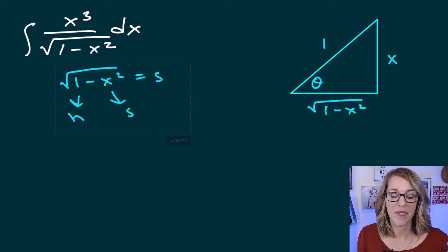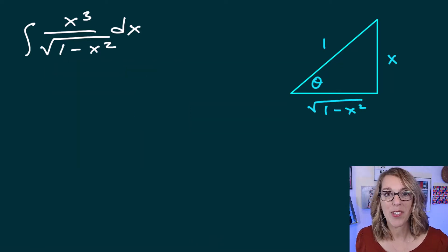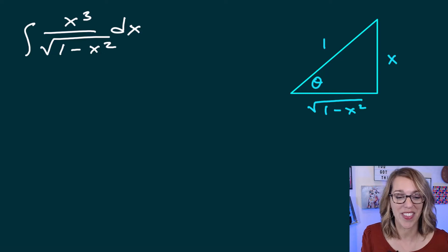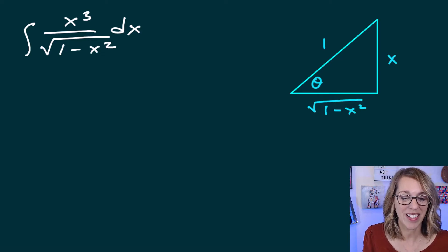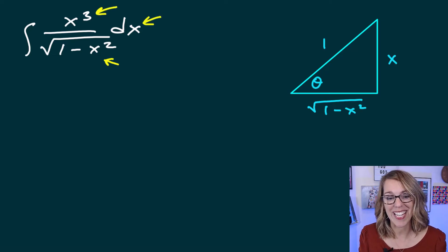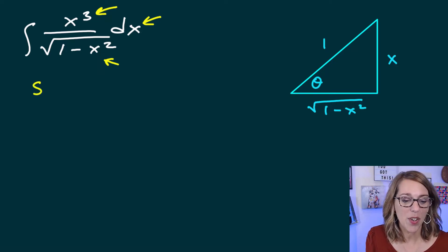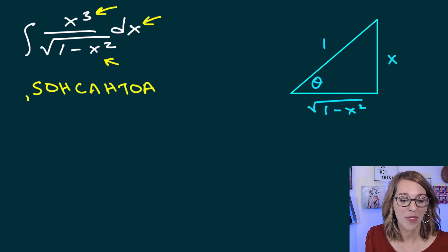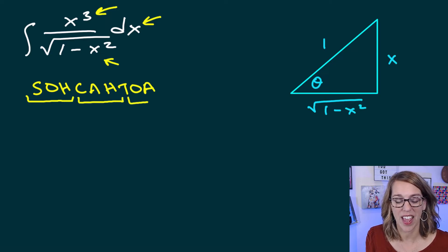Now that the triangle is defined, I'm going to exchange everything in the integral in terms of theta. I need to deal with the square root of 1 minus x squared, the x cubed, and the dx. I'm going to use SOHCAHTOA to work through each of my trig functions — sine, cosine, and tangent.